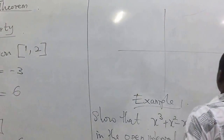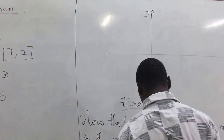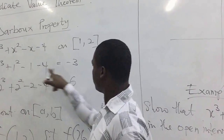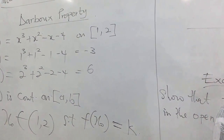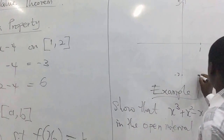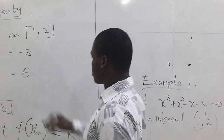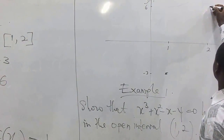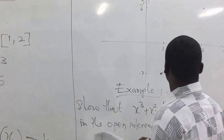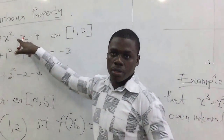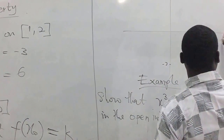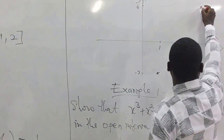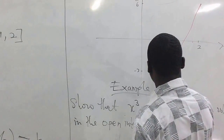Here we have the plane with x and y axes. Let's locate 1 and 2 on the x-axis. At x = 1 we have negative one, so we have a point around this area, and at x = 2 we get six, so we have a point here. The function is cubic, so let's draw it — it needs to pass through these two points. Our interest is just to look at the given interval, ending it here at 1 and 2.